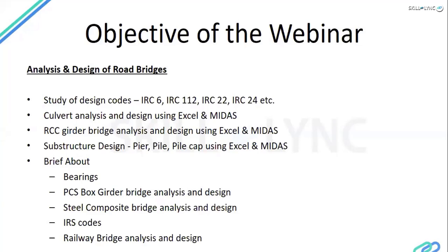We have two codes: IRC and IRS codes. IRC stands for Indian Road Congress codes, which basically deals with traffic loads and vehicular loads. IRS codes are Indian Railway codes, covering railway-type loads. There are mainly two types of railways — passenger railway and commercial railway, which we call freight corridors. Before going into design and analysis, we first need to understand the type of codes involved as per the guidelines given by Indian standards.